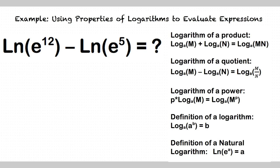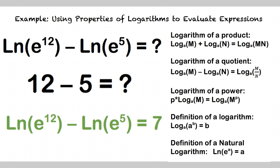By using the definition of natural logarithm, we can simplify the equation to 12 minus 5. We simplify this further to get 7.